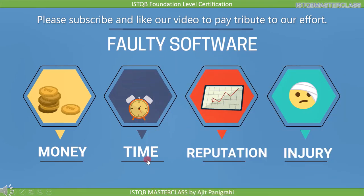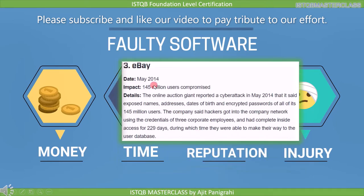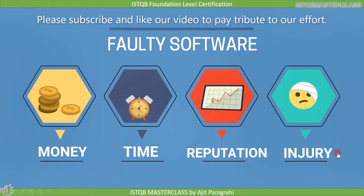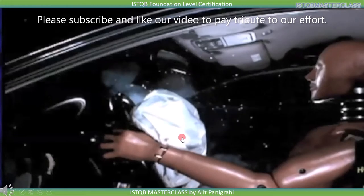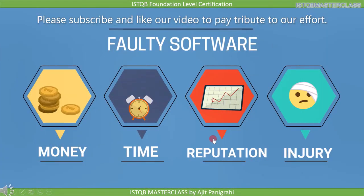Moving to the second impact — time — once cars are in the garage undergoing repair, the company also has to do damage control, and all of these things take a lot of time. The third example is loss of reputation: in 2014 there was a security breach in eBay's software, meaning the software was compromised and not working as expected, which resulted in loss of reputation. Finally, if an airbag system does not work as expected, it can result in injury or death. So these are the four impacts of faulty software: loss of money, time, reputation, and injury or death.